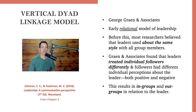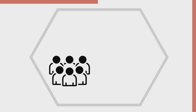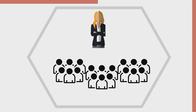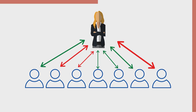Now, before this, most researchers believed that leaders used about the same style of leadership with the overall group — that the leader led the group as an entire collective. What Graen and Associates found, though, is that leaders treated individual followers differently, and followers then had their own individual perceptions of their leader, both positive and negative.